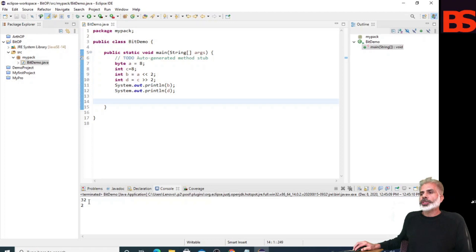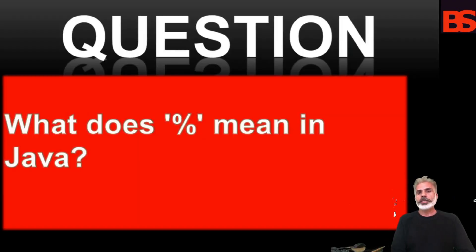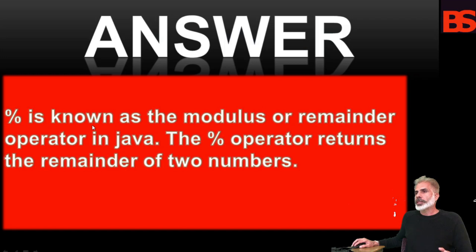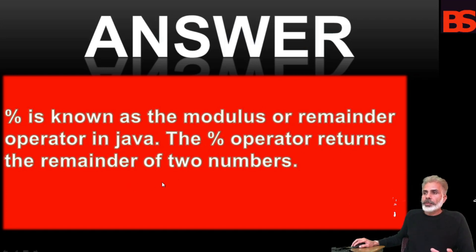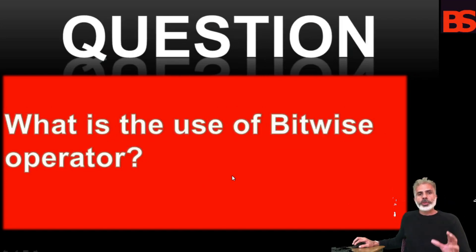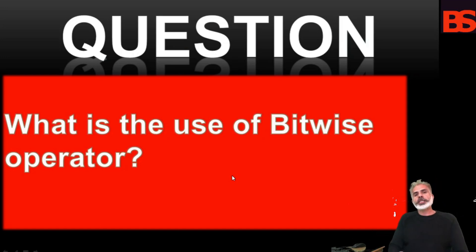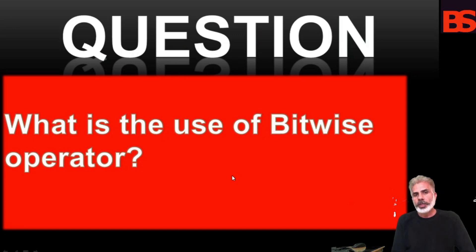This is the output of the program. In the last lecture I had asked what the % symbol means in Java — the answer is it is known as the modulus or remainder operator, which returns the remainder of two numbers. Today's question is: what is the use of bitwise operators? Please give your answer in the comment section, otherwise I will give the answer in the next video. I hope you enjoyed this video — see you in the next one.